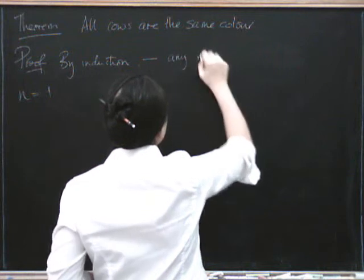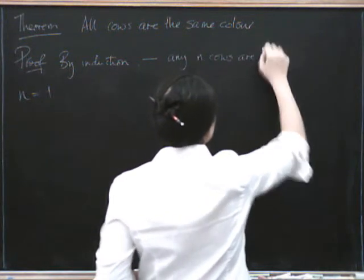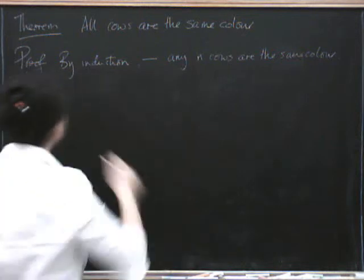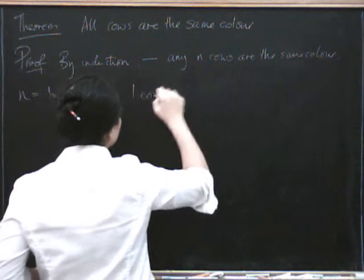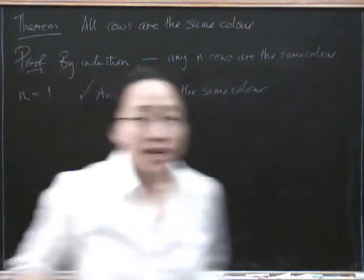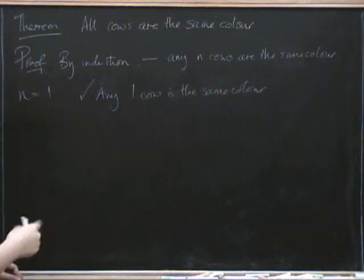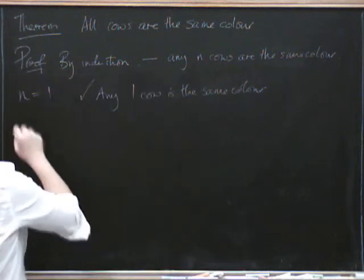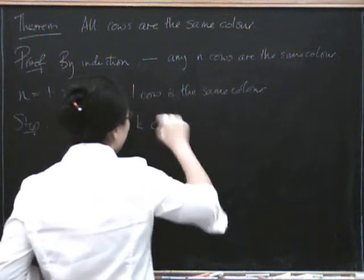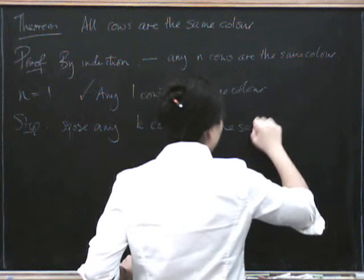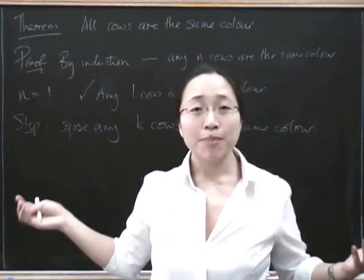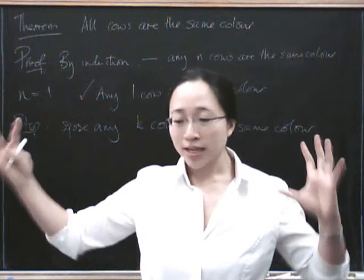We're going to prove that any n cows are the same color. Any one cow is the same color — that's the base case. Now let's do the induction step. Given that we've proved it for k cows, we have to prove it for k plus one cows. Suppose any k cows are the same color. Well, clearly if any k cows are the same color, then any k plus one cows must be the same color.